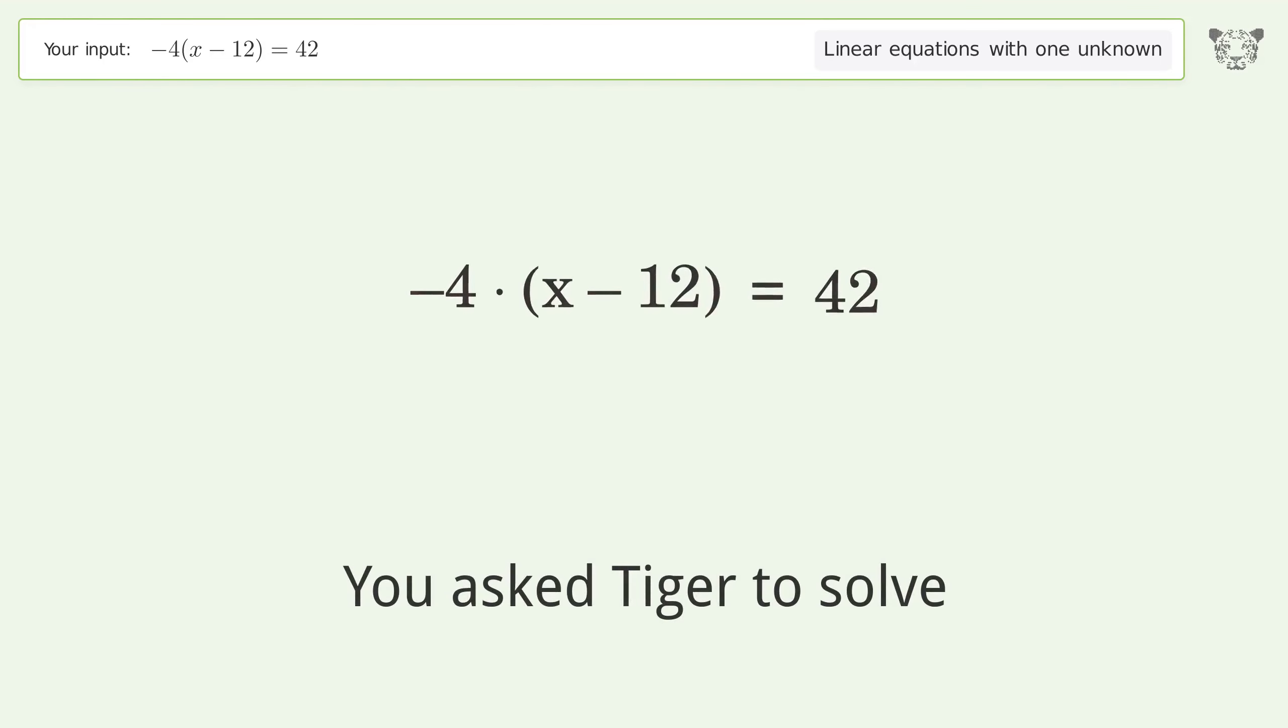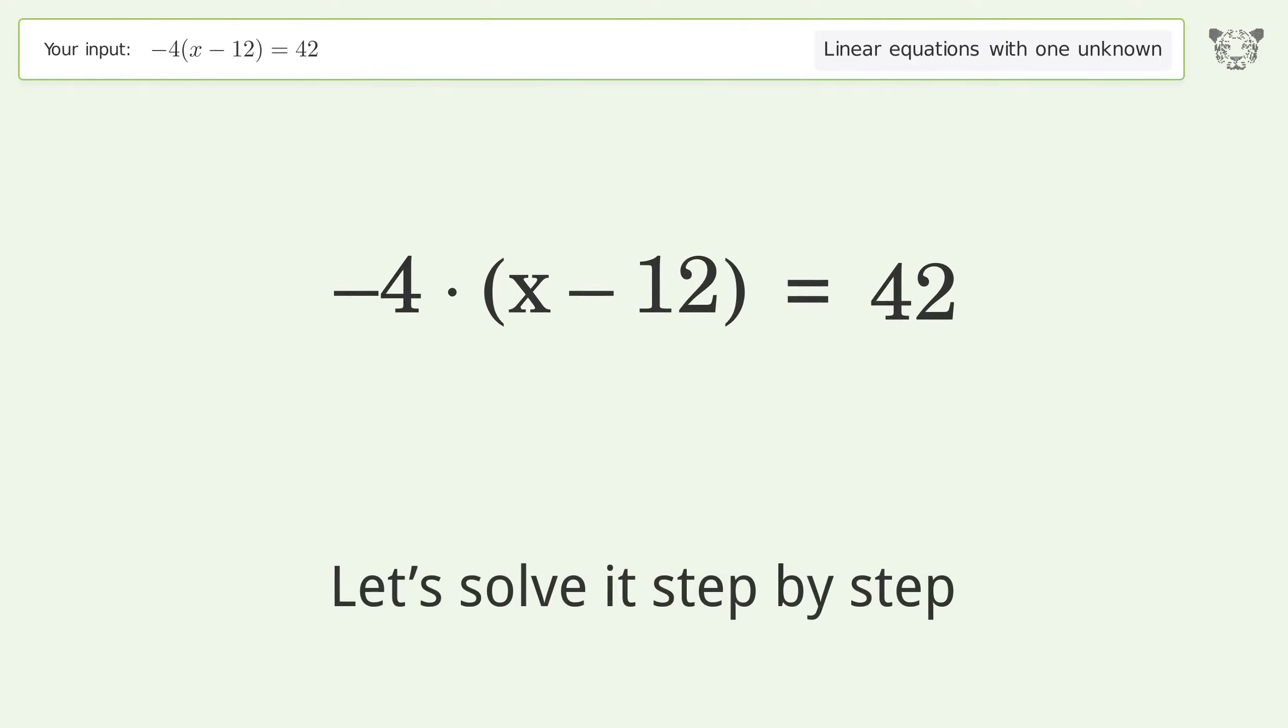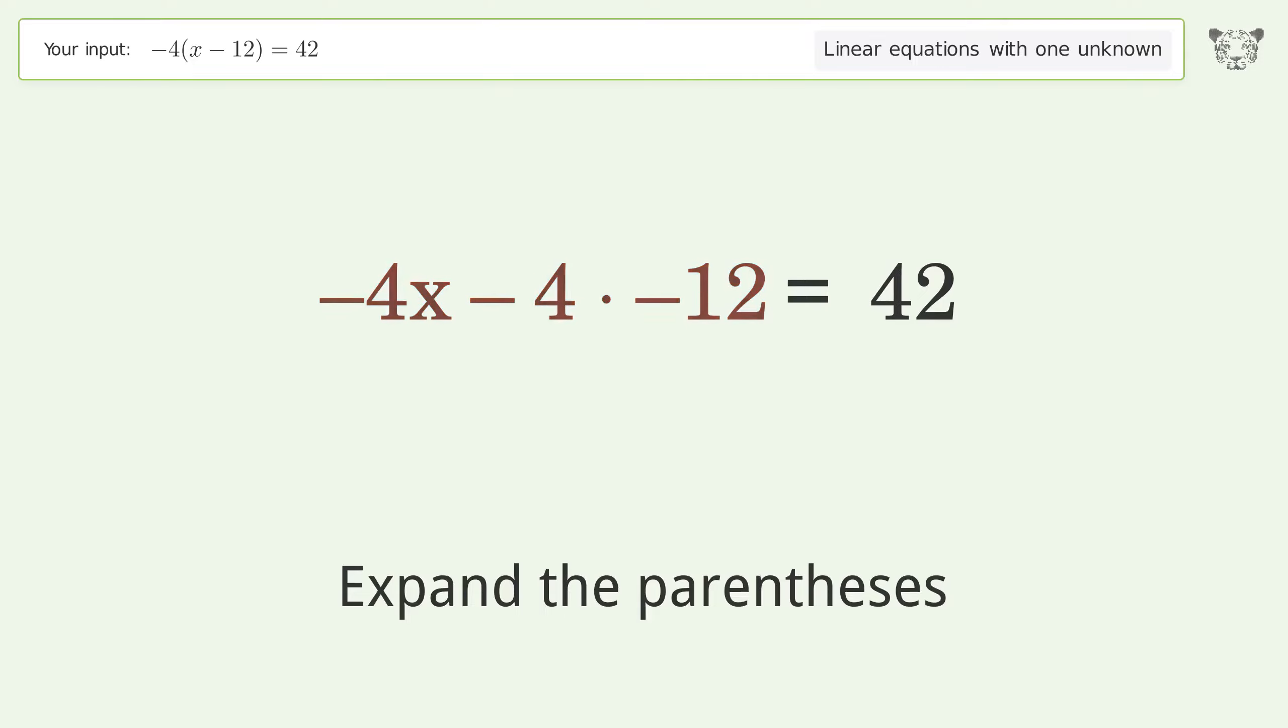You asked Tiger to solve this, which deals with linear equations with one unknown. The final result is x equals 3 over 2. Let's solve it step by step. Simplify the expression. Expand the parentheses. Simplify the arithmetic.